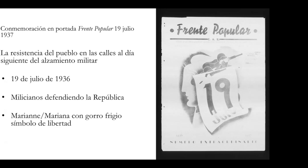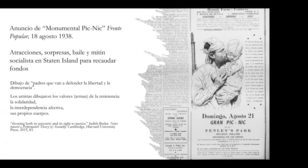For workers' organizations in the U.S., commemorating July 19th was essential. Here you can see a drawing depicting two militiamen in the trenches on that calendar date, with Mariana wearing the Phrygian cap — the symbol of freedom. This commemoration continued every year until 1977, when democratic elections began in Spain and the newspaper announced it was closing because they had achieved what they sought.